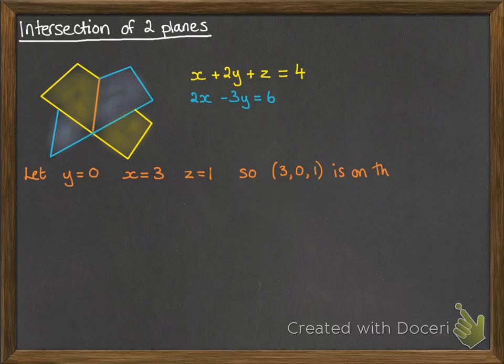So this gives us a point that is on the line because it satisfies both of the equations for the planes. We'll do that again for one of the other variables. So we can get another point on the line.